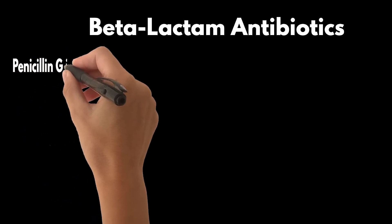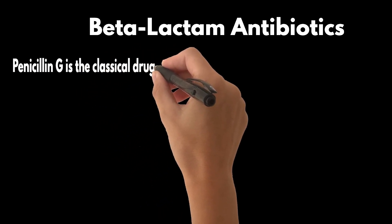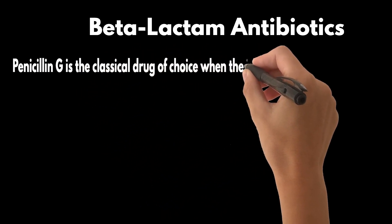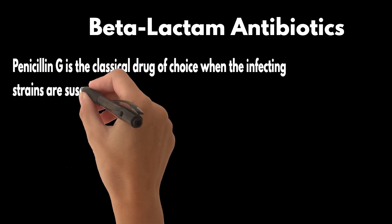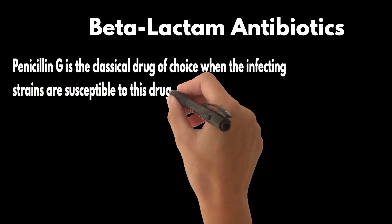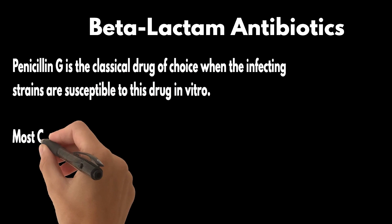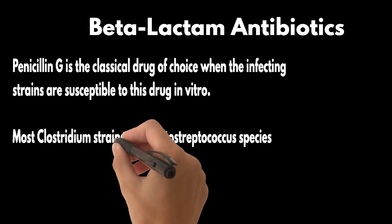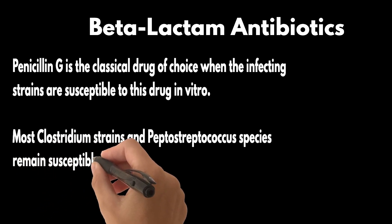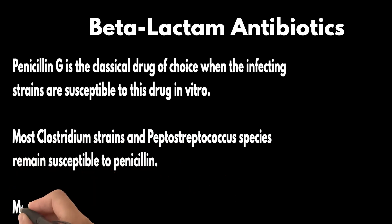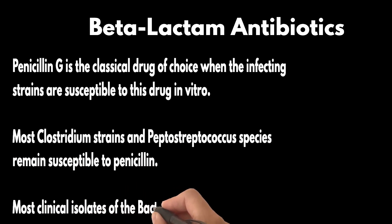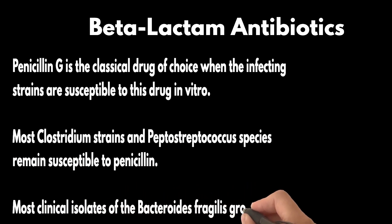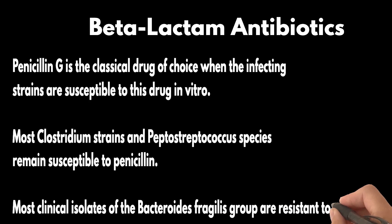Which antimicrobial agents are effective against anaerobic bacteria? Penicillin G is the classical drug of choice when the infecting strains are susceptible in vitro. Most Clostridium strains — with the exception of some strains of C. ramosum, C. clostridioforme, and C. innocuum — and Peptostreptococcus species remain susceptible to penicillin. Most clinical isolates of the Bacteroides fragilis group are resistant to penicillin G, and it should not be used for treatment of infections caused by these organisms.